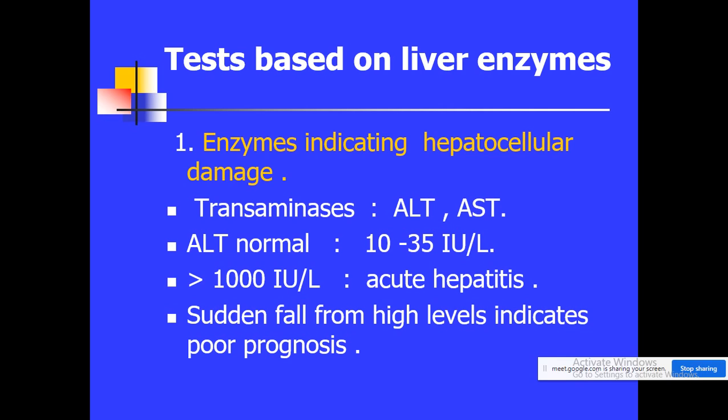A sudden fall from high ALT levels to low levels indicates poor prognosis of the disease. This should be kept in mind when monitoring liver enzymes, as physicians use this parameter to guide treatment decisions.